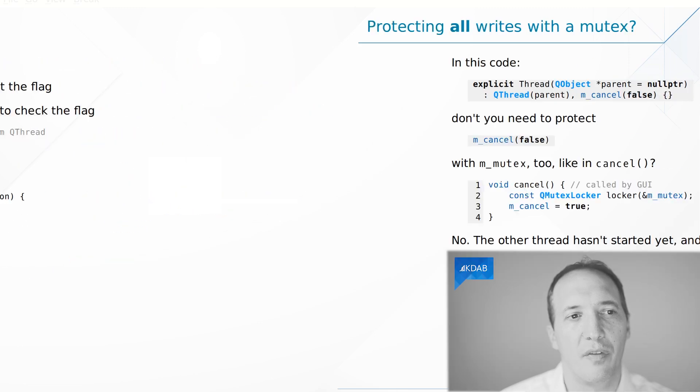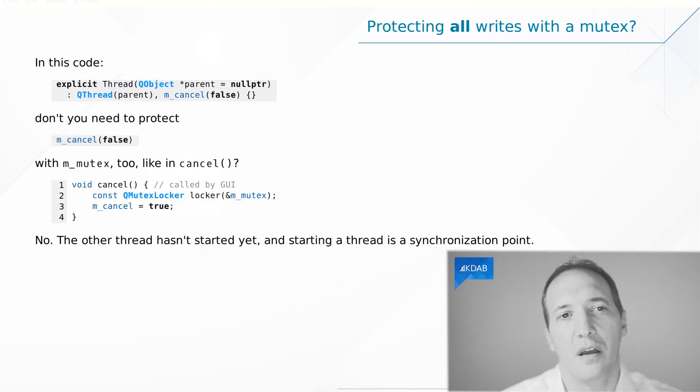One final thing to think about is we saw a write, the write to true—this one was protected by a mutex. What about the write to false in the constructor? Here we are setting the value as well. Do we need to protect this with a mutex? We could think yes, we need to, right? It's a write, there is going to be a read in another thread, we need a mutex. But actually we don't in this case, because the constructor is called before the secondary thread is started.